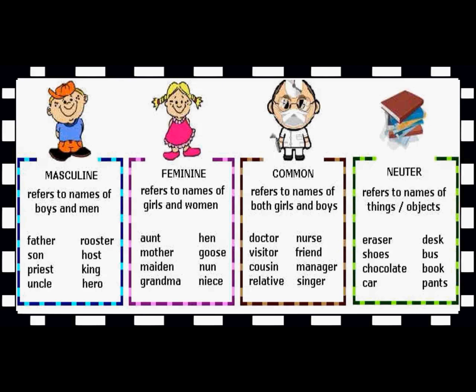Now what is neuter gender? Neuter gender refers to names of things or objects. Can you see eraser? While seeing the eraser, can you tell whether it is a male or a female? No. When you see a desk, shoes, bus, chocolate, book, car, pants — can you tell whether it is a male or a female? No. Such nouns come under neuter gender. Normally, neuter gender refers to things or objects.